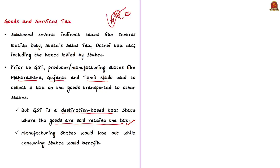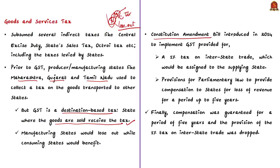Because of this, manufacturing states would lose out while consuming states would benefit. To convince manufacturing states to agree with GST implementation, the central government introduced a constitutional amendment bill in 2014. The Constitution had to be amended because the tax jurisdiction of center and states is given in the Seventh Schedule of the Indian Constitution. The bill had two important provisions: first, a one percent tax on interstate trade to be given to the supplying state (e.g., Tamil Nadu); second, parliamentary law to provide compensation to states for loss of revenue for five years.